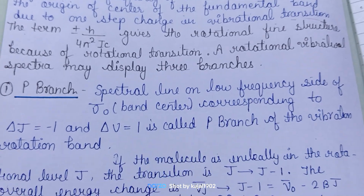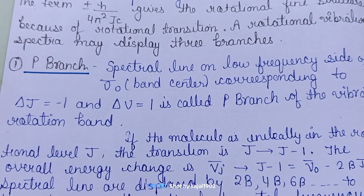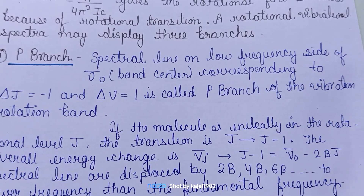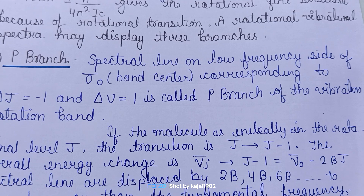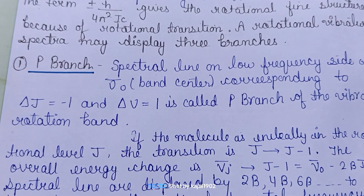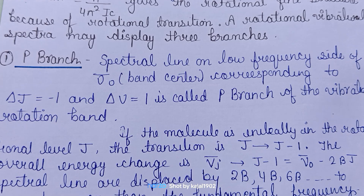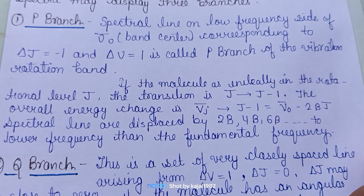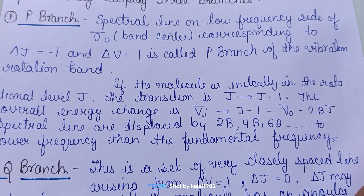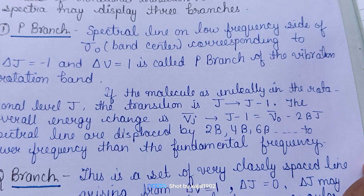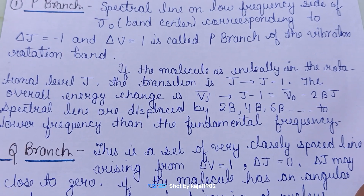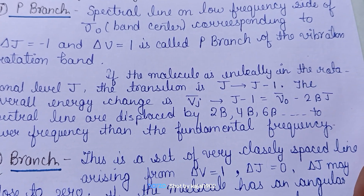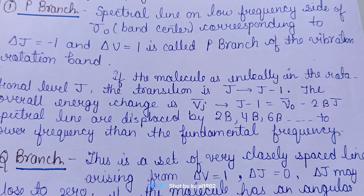The rotational-vibration spectrum may be displayed by three branches: P, Q, and R. The P branch is the spectrum line on the low frequency side of the band center, corresponding to ΔJ = -1 and Δv = 1. The molecule in the initial rotation level J transitions from J to J minus one. The overall energy change gives spectral lines displayed at 2B, 4B, 6B, and so on, at lower frequencies than the fundamental frequency.